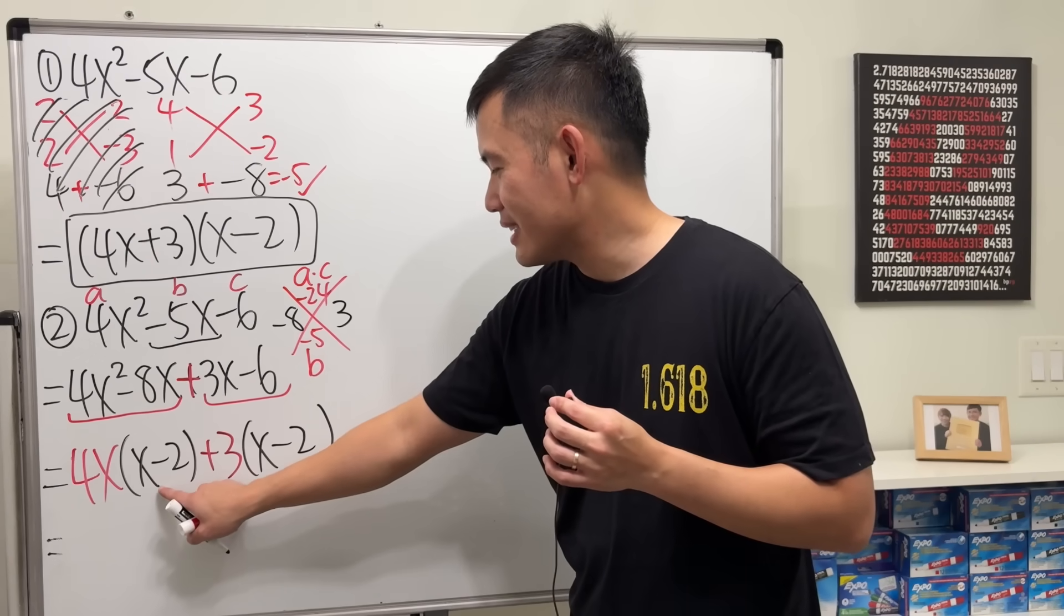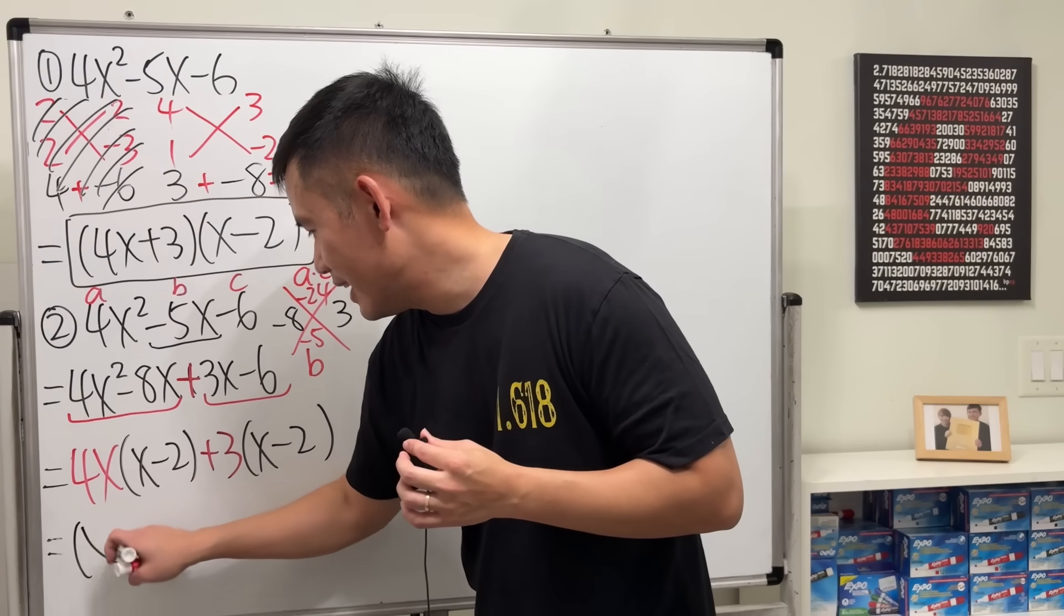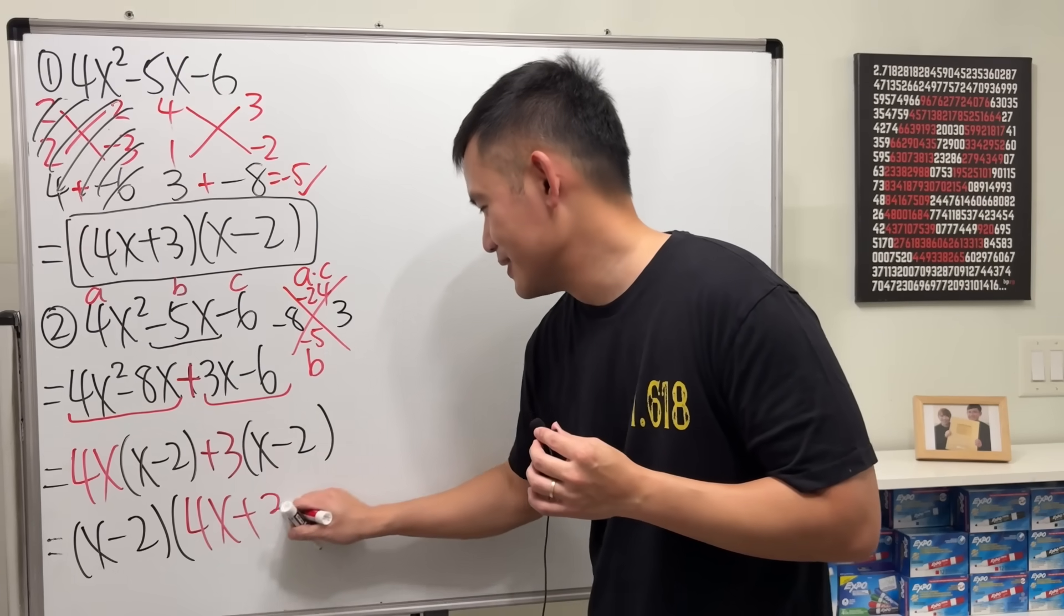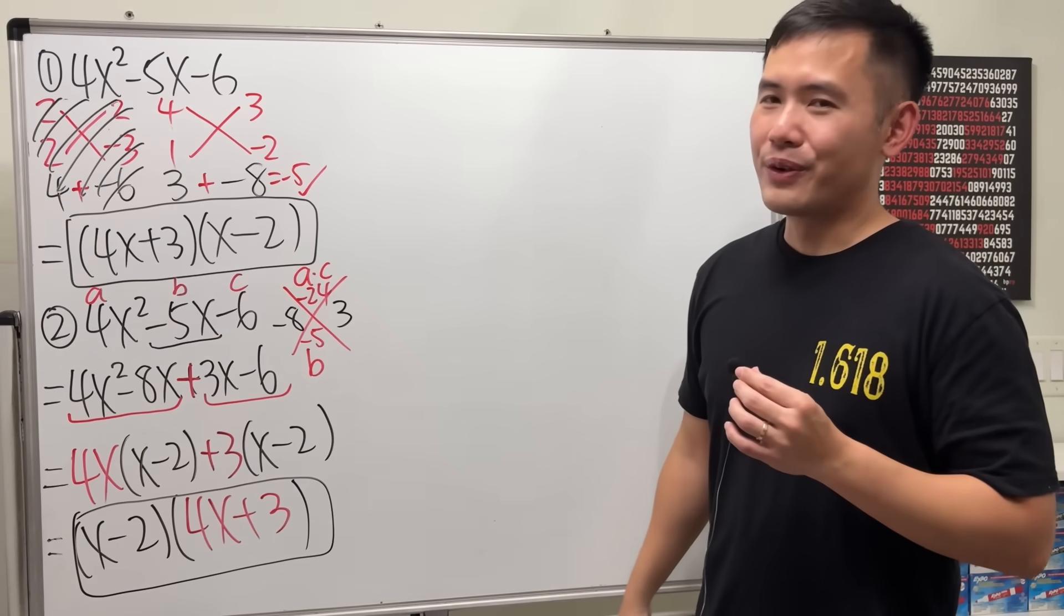Hey, look, there's an equal sign right there already. It's x minus 2 times 4x plus 3. Just like that. Same answer, of course.